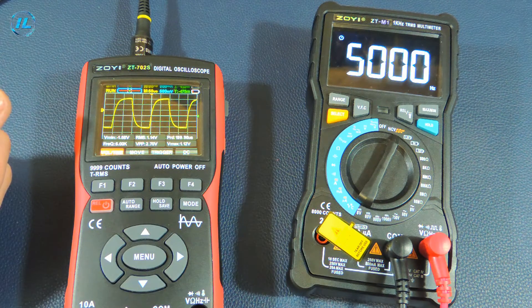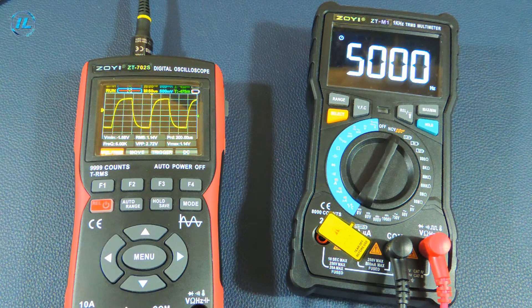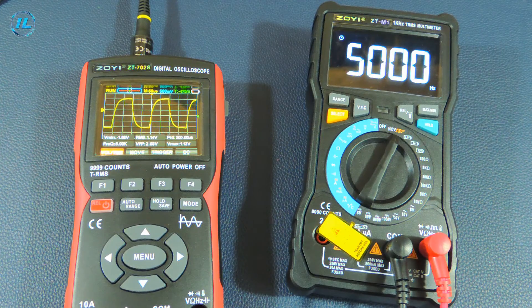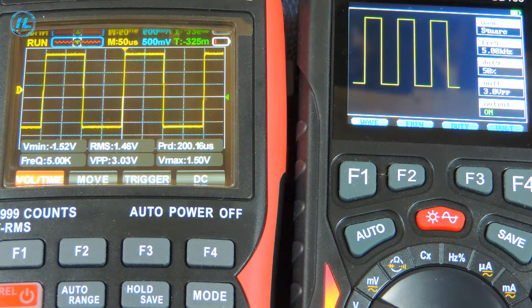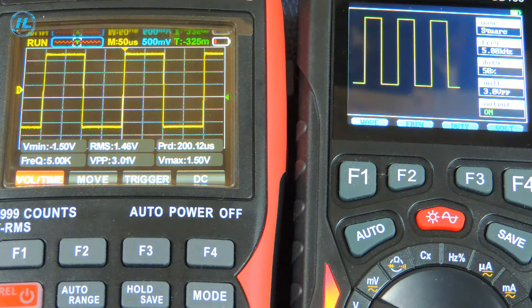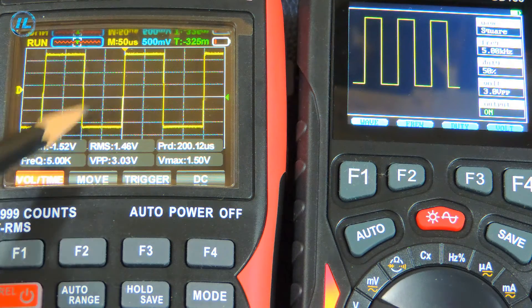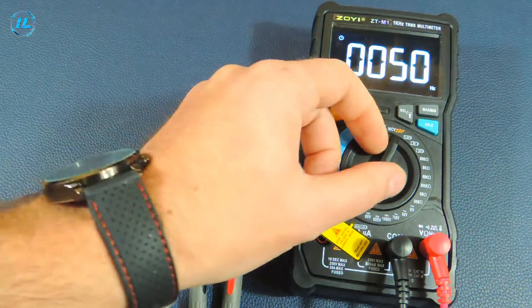But the shape of the signal is no longer rectangular at all. And the problem here is not in the oscilloscope, but in the generator. For example, I took another oscillator and set the frequency to 5 kilohertz. As you can see, the signal is quite rectangular in shape.